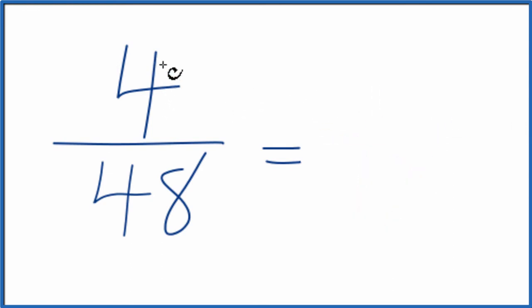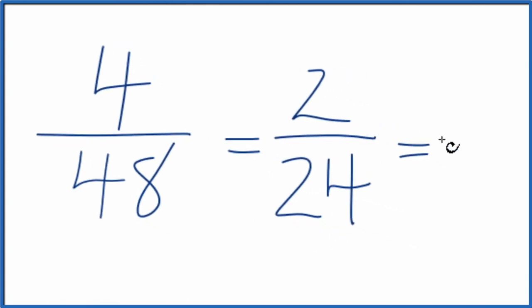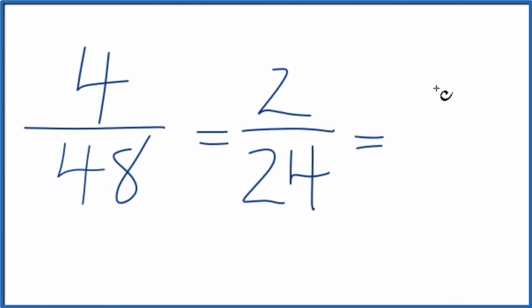You could divide the top and bottom by 2. 4 divided by 2 is 2. 48 divided by 2 is 24. These are even numbers. Let's divide by 2 again. 2 divided by 2 is 1, and 24 divided by 2 is 12.